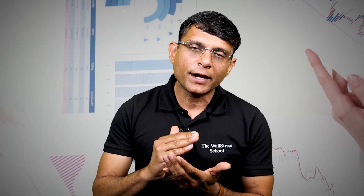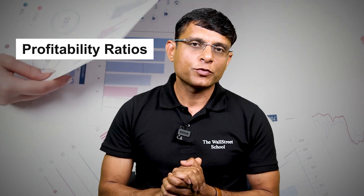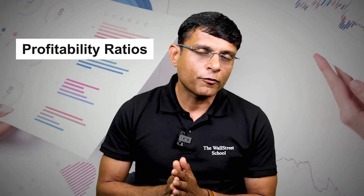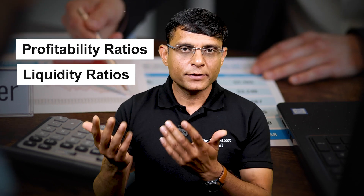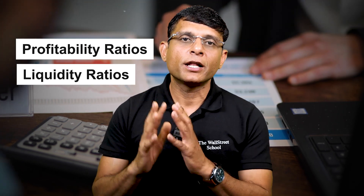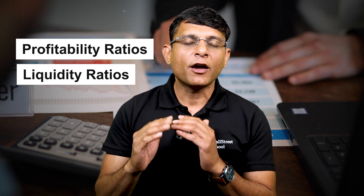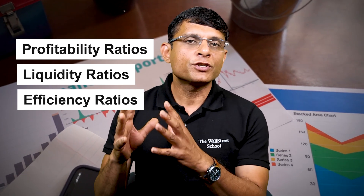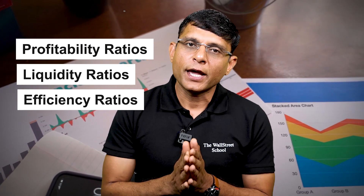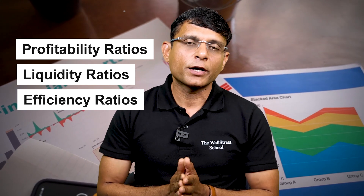Understanding key financial ratios helps you analyze these statements more powerfully. Profitability ratios like gross profit and operating profit margins help you understand how profitable the business is. Liquidity ratios like current ratio and acid-test ratio help you understand the financial health and cash position of the business. Efficiency ratios like asset turnover ratio help you understand operational efficiency. These ratios help compare companies and track performance over time.